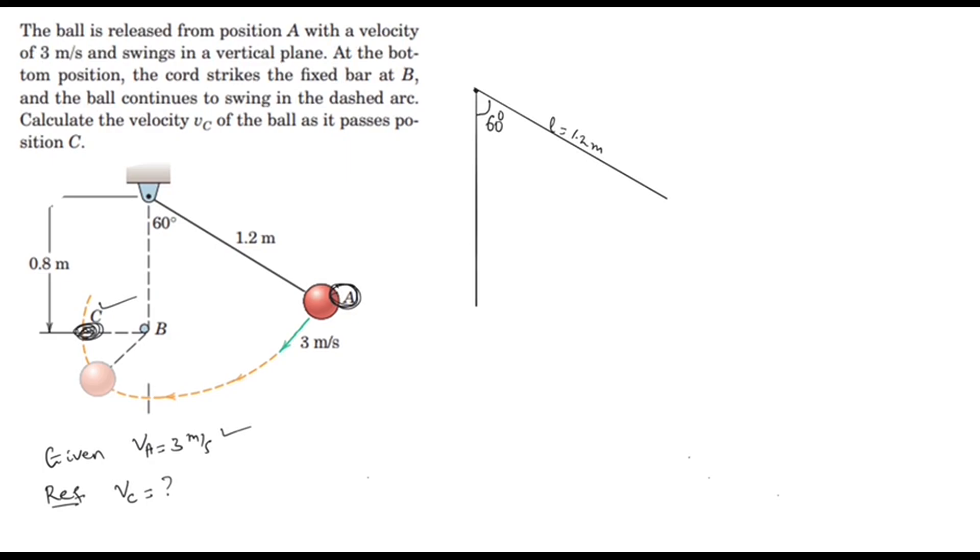The length is 1.2 meters. The vertical component is L times cos 60 degrees, which equals 1.2 times cos 60 degrees. Since cos 60 degrees is half, it will be 0.6.